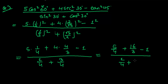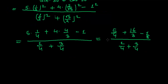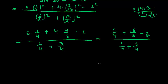So we have 5/4 plus 16/3 minus 1, all divided by 1/4 plus 3/4. To add these fractions, we need the LCM of 4, 3, and 1. The LCM of 4, 3, and 1 is 12.